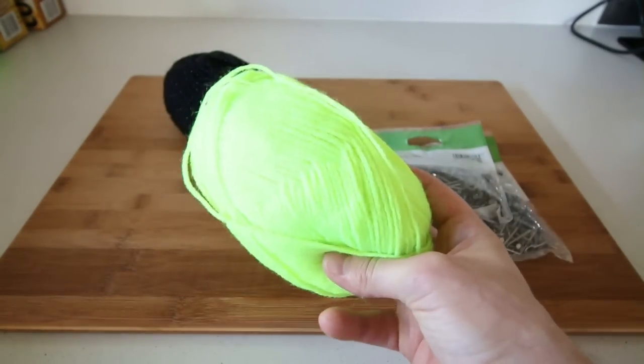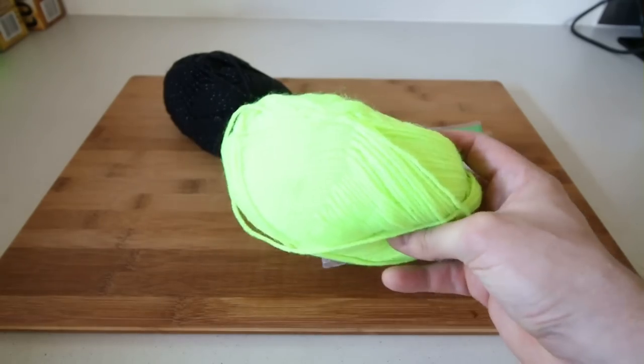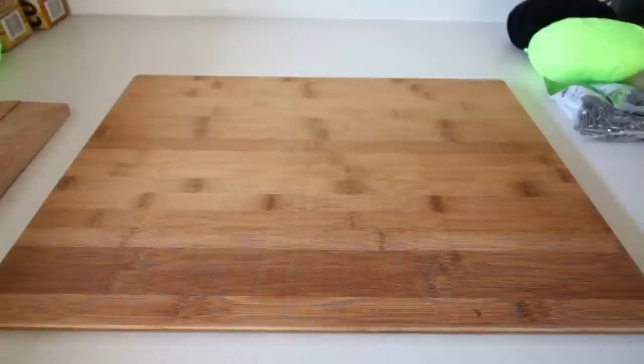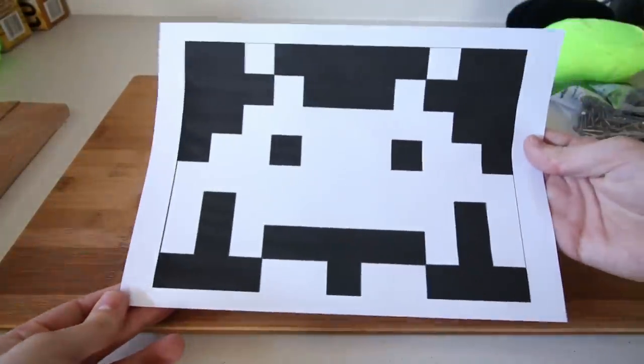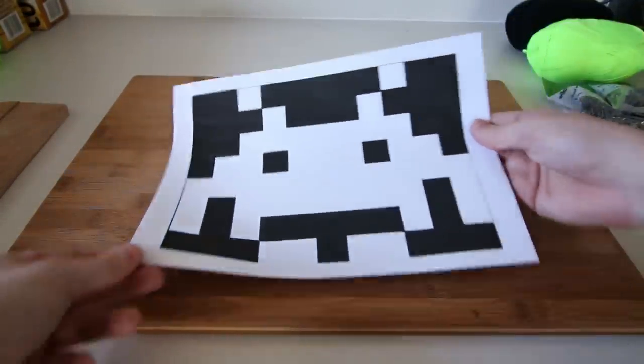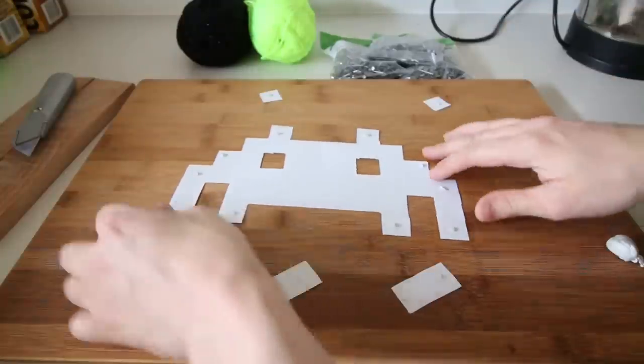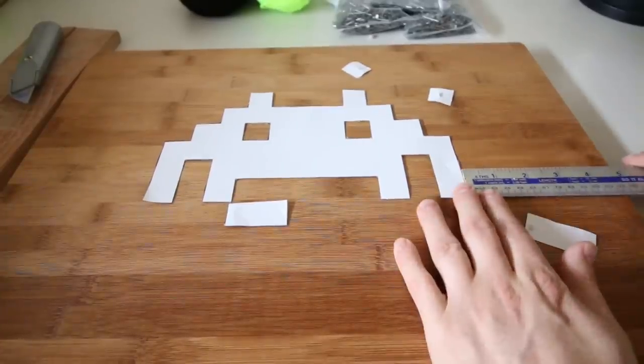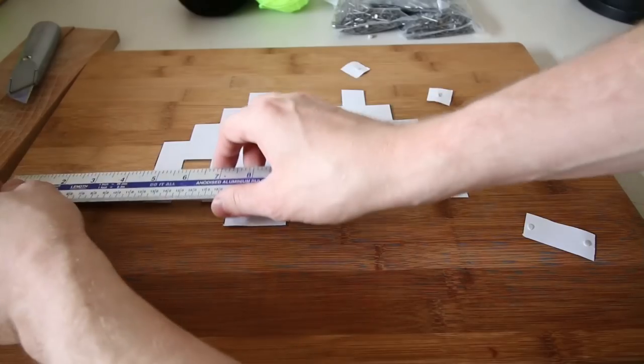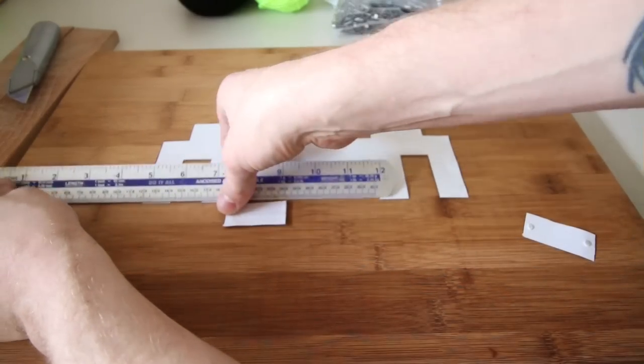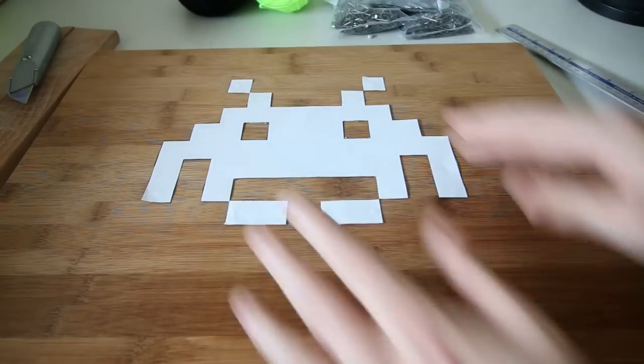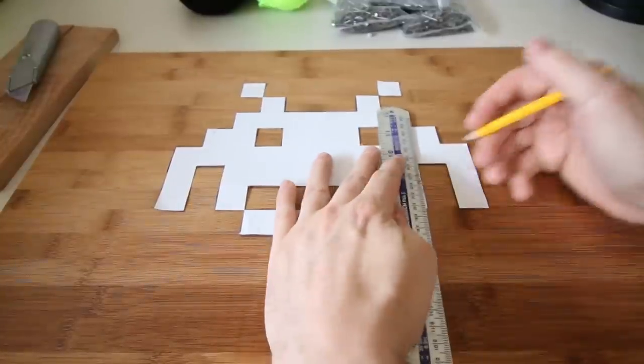I began by printing off an A4 picture of a Space Invader and then cut it out to use as a stencil. I used some tack to stick down the design to the board. I made sure everything was centered using a ruler, and once it was in place I used the ruler to help draw around the design.